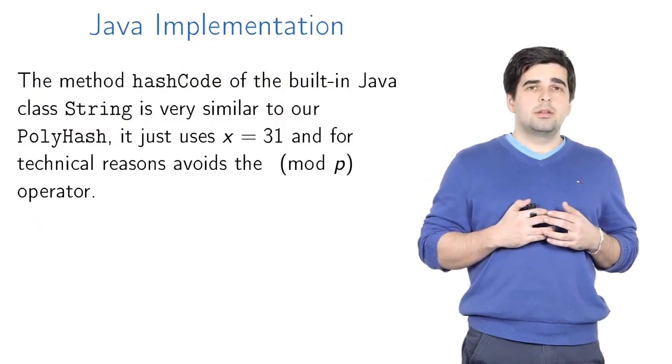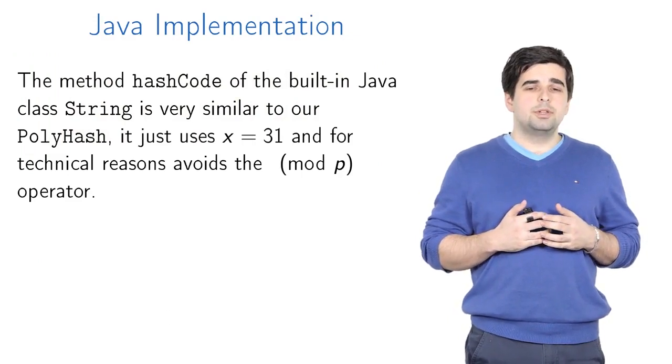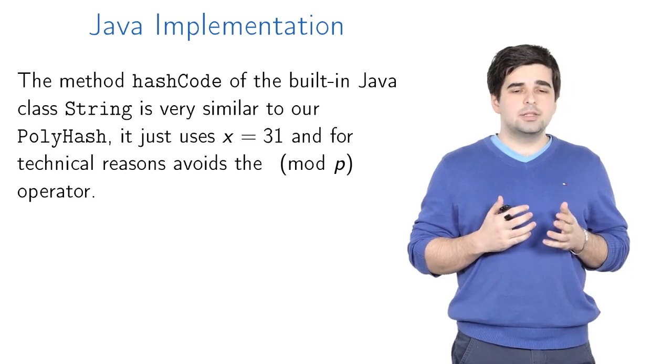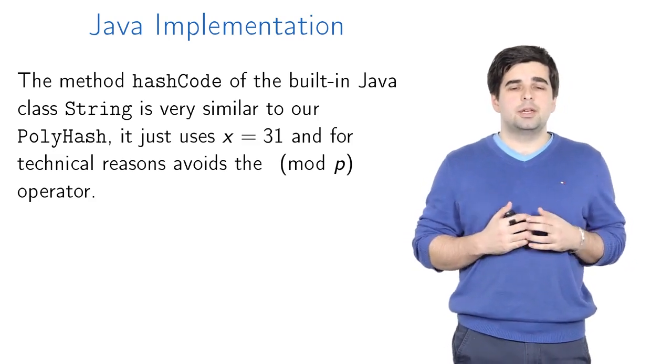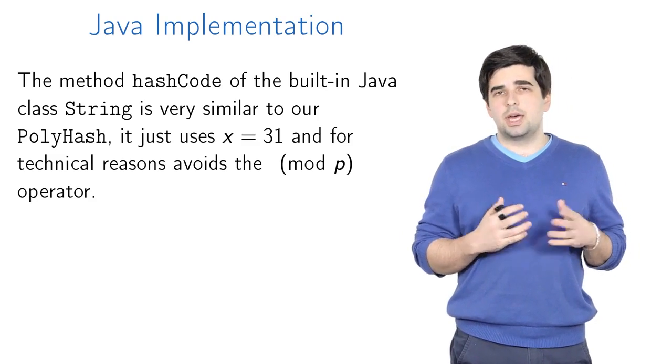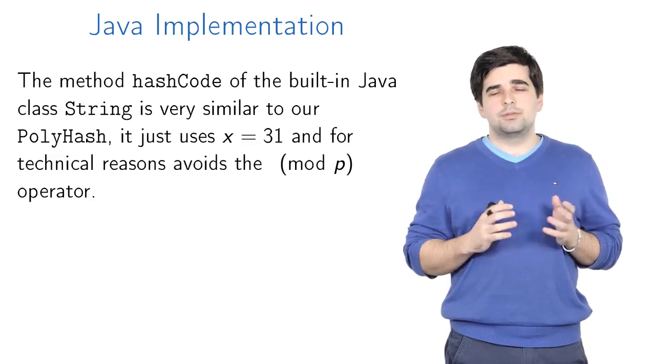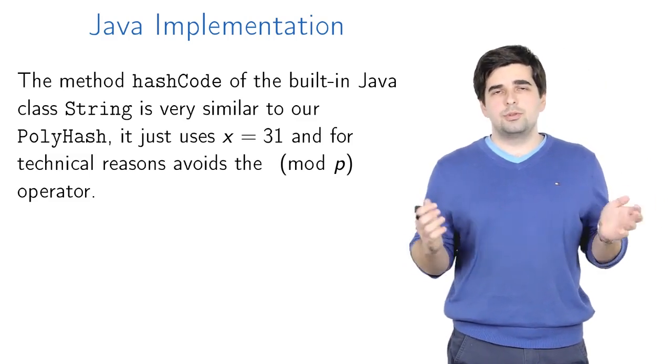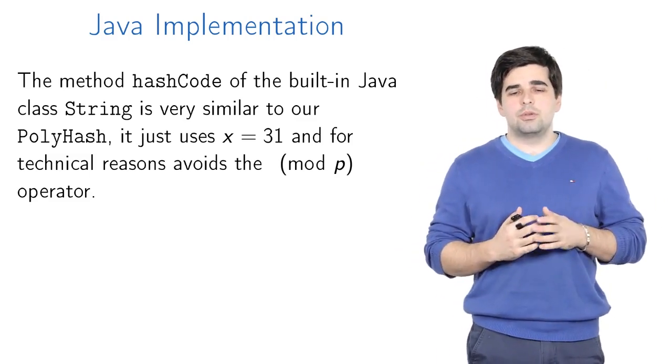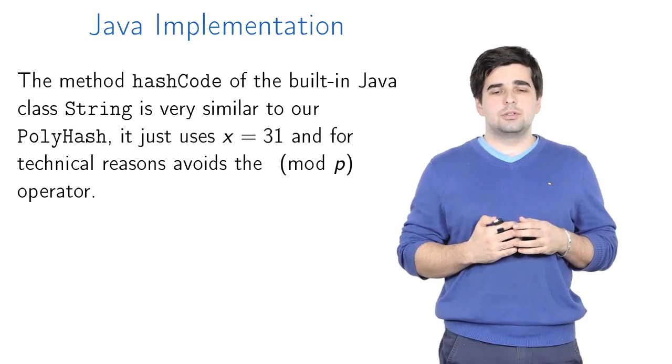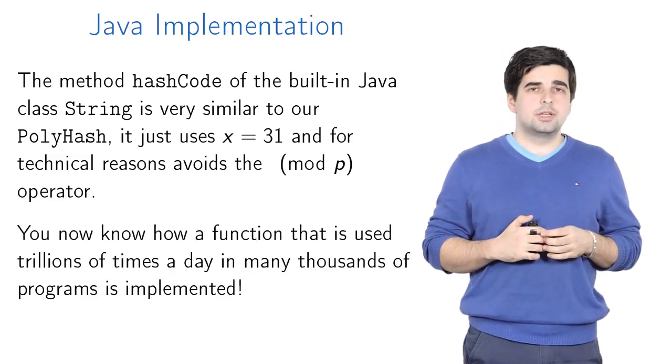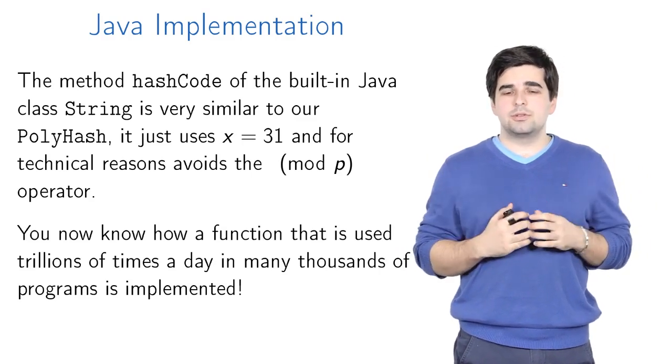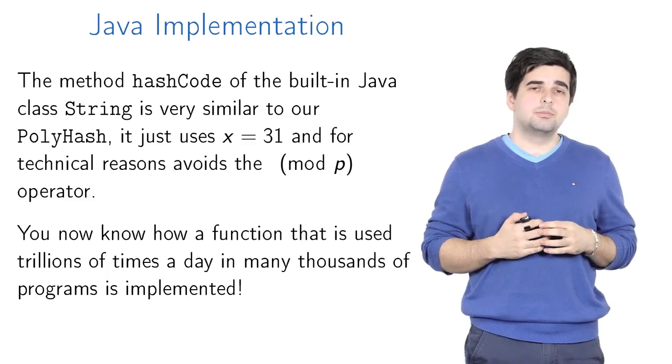By the way, the implementation of the built-in hashCode method in the class String in Java is very similar to our procedure PolyHash. The only difference is that it always uses x equal to 31 and for some technical reasons it avoids the modulo p operator. It just computes the polynomial sum without any modulo division. So now you know how a function that is used probably trillions of times a day by thousands of different programs is implemented.